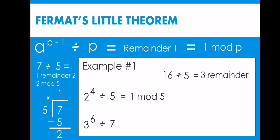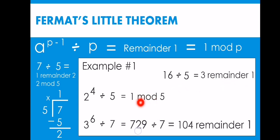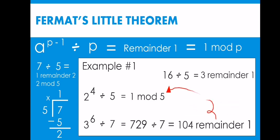Another example: 3 raised to 6 divided by 7. Notice that 7 is a prime number, 3 and 7 are different integers, and 3 is raised to 7 minus 1, which is 6. So by Fermat's Little Theorem, our answer will definitely be a remainder of 1. Indeed, 3 raised to 6 is 729, and 729 divided by 7 is 104 remainder 1 — written in modulo form as 1 mod 7.